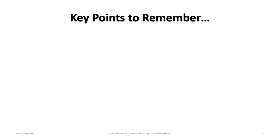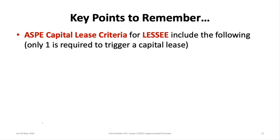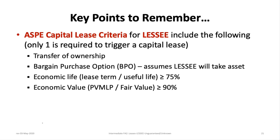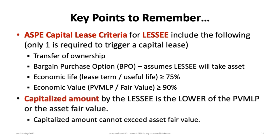ASPE capital lease criteria for the lessee — only one is required to trigger a capital lease: a transfer of ownership; a bargain purchase option (BPO), which assumes the lessee will take ownership at end of lease; economic life, where lease term divided by useful life is greater than or equal to 75%; and economic value, where the present value of minimum lease payments divided by fair value is greater than or equal to 90%. The amount capitalized by the lessee is the lower of the present value of minimum lease payments or the asset fair value — it cannot exceed fair value, which is a common student mistake.